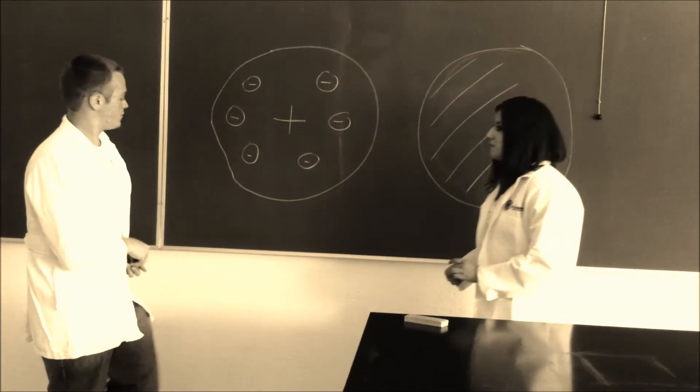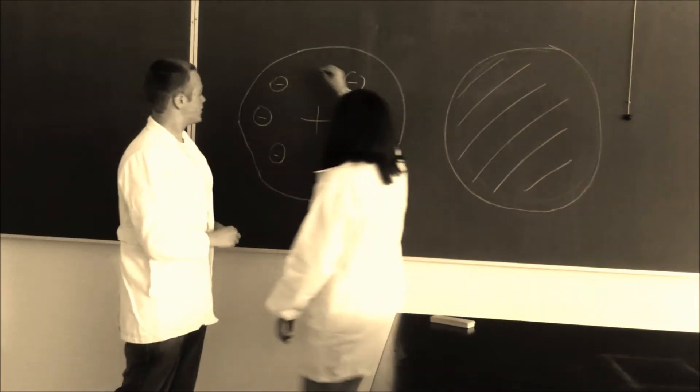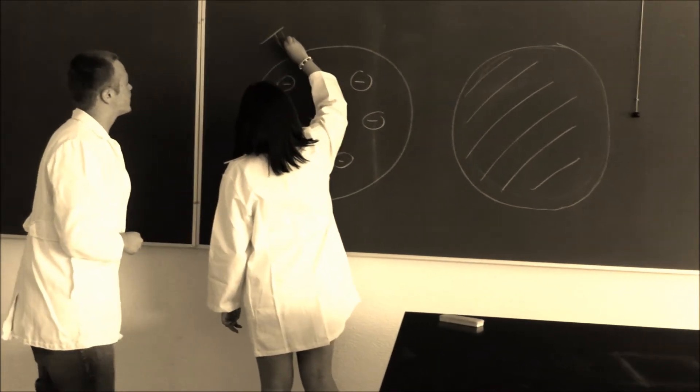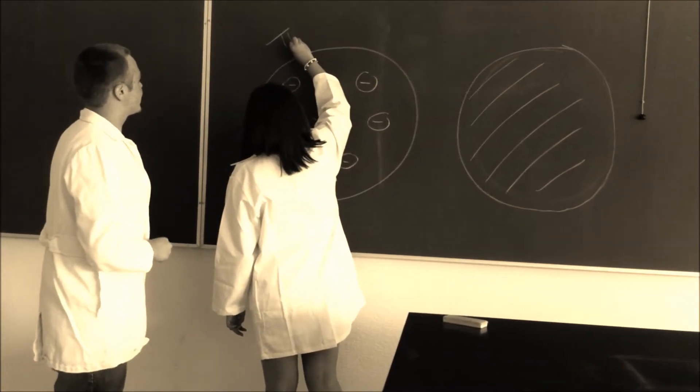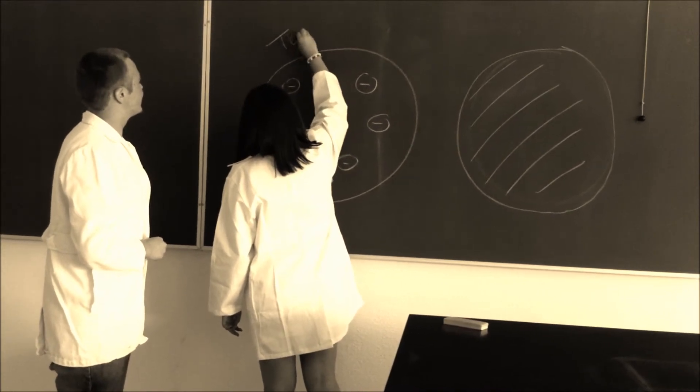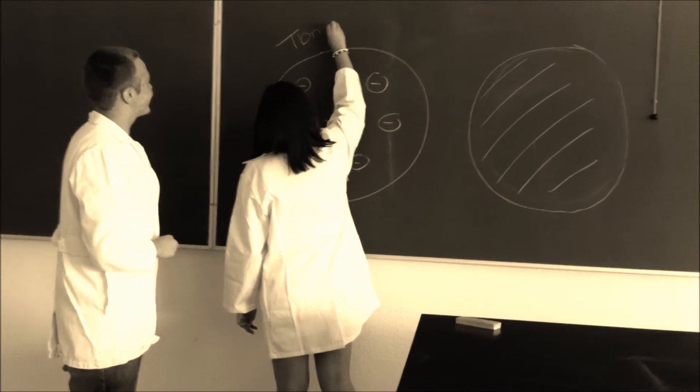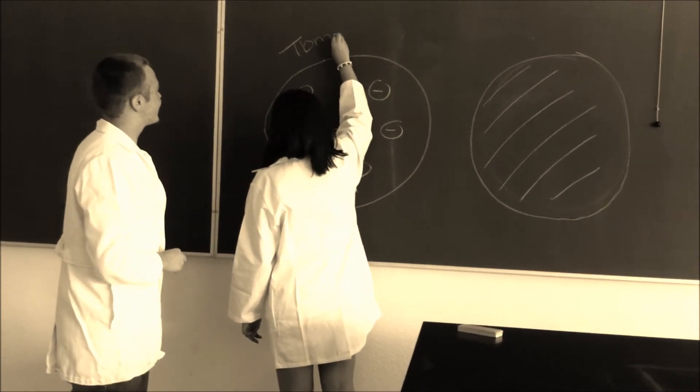Thompson's atomic theory proposed a model of atoms, which is known as plum pudding model, or Christmas pudding or chocolate chip cookie model. Till the end of the 19th century, the concept of atom was similar to a small solid billiard ball.